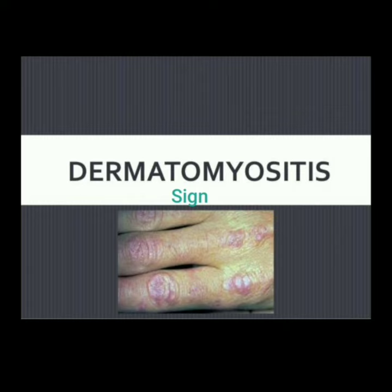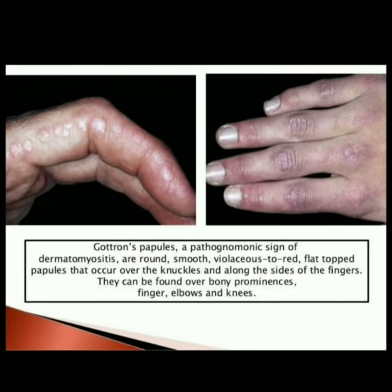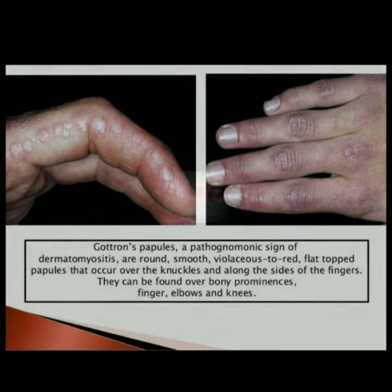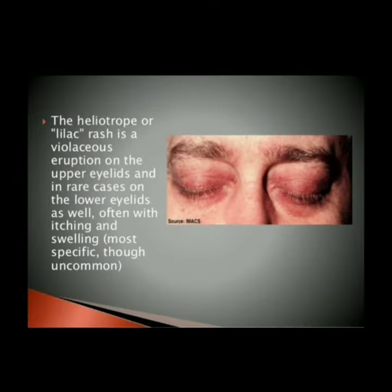Gottron's papules, a pathognomonic sign of dermatomyositis, are round, smooth, violaceous to red, flat-topped papules that occur over the knuckles and along the side of the fingers. They can also be found over bony prominences including fingers, elbows, and knees.